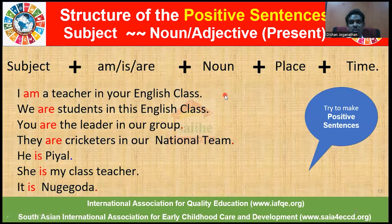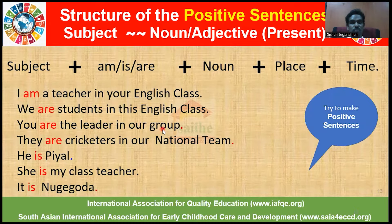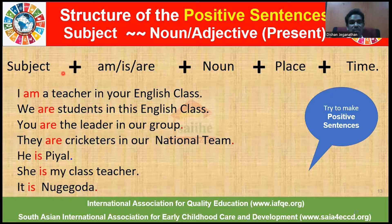Let's look at some examples. I am a teacher in your English class. We are students in this English class. You are the leader in our group. They are cricketers in our national team. He is Piyal. She is my class teacher. It is Nugegoda. When we look at these examples, they begin with a subject — I, we, you, they, he, she, it — plus am, is, or are, followed by the noun. We could also add place or time to expand the sentence.